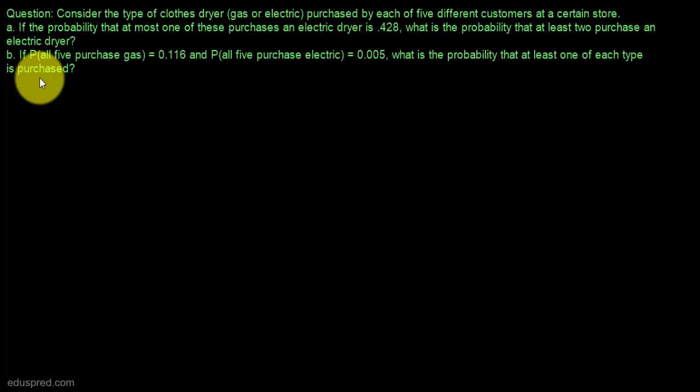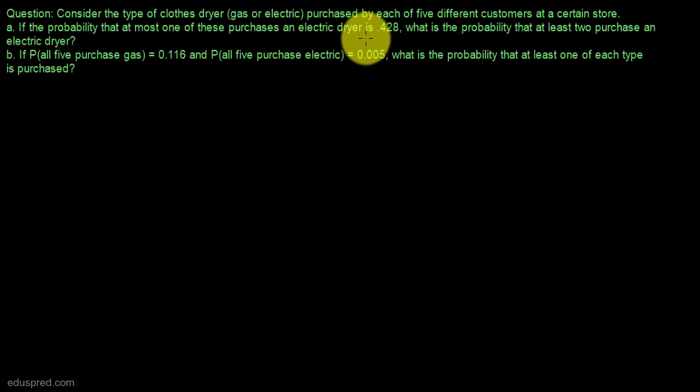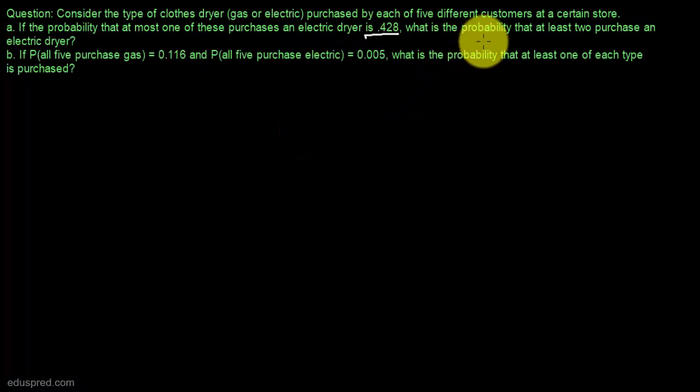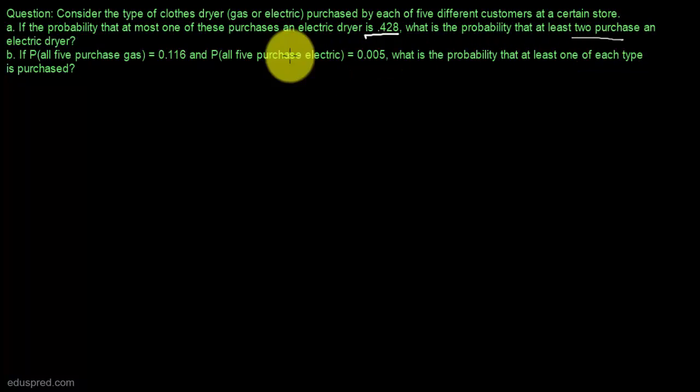Consider the type of clothes dryer purchased by each of five different customers at a certain store. There are two types of clothes dryer: gas or electric. In part A, we are given that the probability that at most one of these purchases an electric dryer is 0.428, and we have to find the probability that at least two purchase an electric dryer.